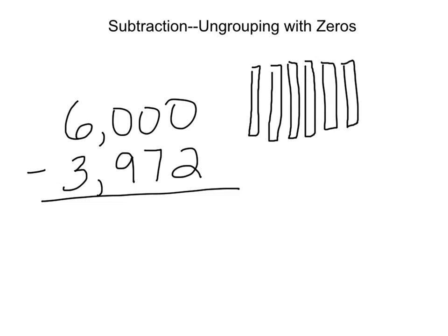When we look at the 6,000 we can see already that if we try to go to the ones place and take 2 out of 0, we are going to have no luck with that. Because if I have nothing, I cannot take 2 away from that without getting into some weird math stuff.